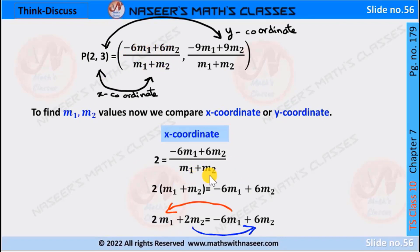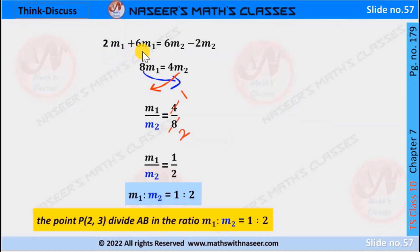Now we transpose M1 + M2 from denominator to LHS, then we can write it as 2(M1 + M2) = −6M1 + 6M2. Now using distributive law, we can write it as 2M1 + 2M2 = −6M1 + 6M2. Now we transpose 2M2 from LHS to RHS and −6M1 from RHS to LHS to simplify the equation.